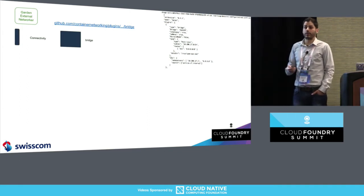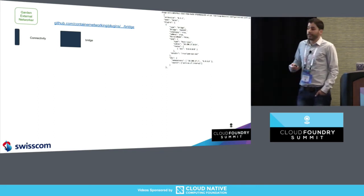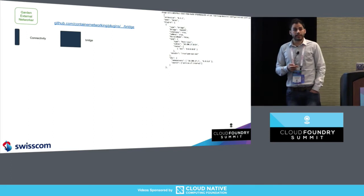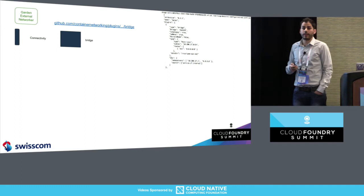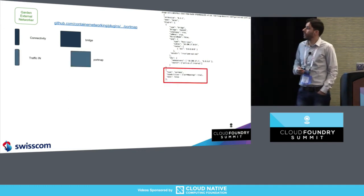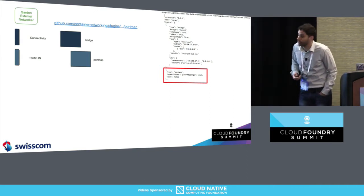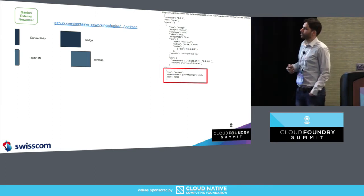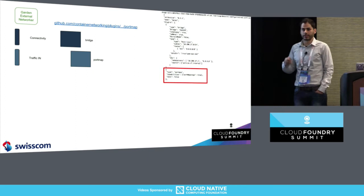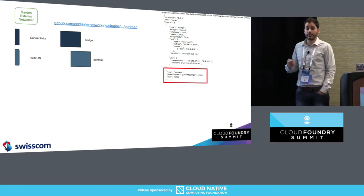I put in first one binary called bridge that takes care of connectivity. This is an open-source binary maintained by the container networking team. On the right you can see the configuration file this plugin requires. Then I added another binary: the IP masq port map. This is also open source — it's the plugin that basically controls all the traffic that flows in the container, controlling how to access the process running inside the container.